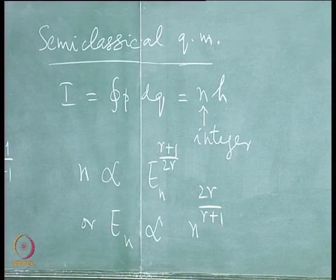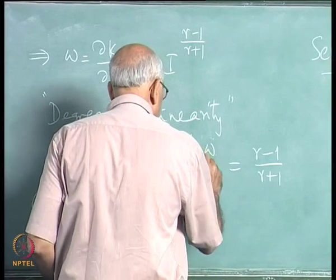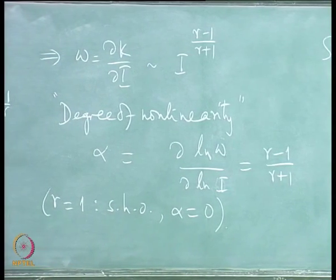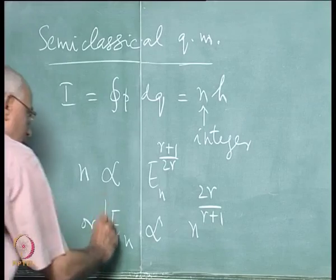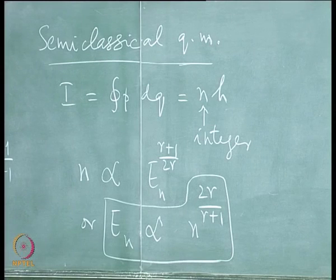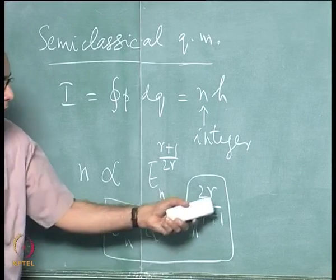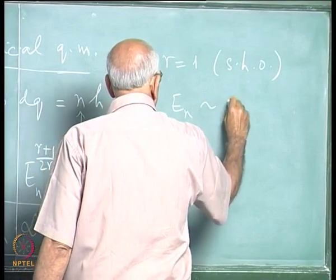This tells us something about the level spacing for quantized motion in this potential. Semi-classically, the nth energy level in this one-dimensional problem depends on the quantum number n according to E_n proportional to n to the power 2r/(r+1), valid for n much greater than unity where the semi-classical rule applies. When r equals 1, the simple harmonic oscillator, E_n is proportional to n itself.